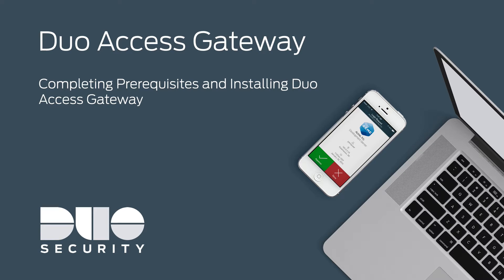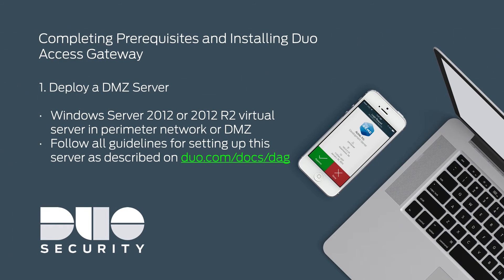Before deploying Duo Access Gateway, make sure you complete the necessary prerequisites. First, deploy a Windows Server 2012 or 2012 R2 physical or virtual server in your perimeter network. This server should neither be in your internal network nor joined to an Active Directory domain. Follow all guidelines for configuring the server as provided in the DAG documentation located at duo.com/docs/DAG.